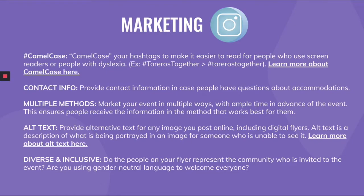Make sure to provide contact information in case people have questions about accommodations at the event. Market your event using multiple methods, with lots of time in advance, so people can receive the information in the method that works best for them. Providing alternative text for any images — especially digital flyers — is really important. Alternative text is a description you write on social media that describes what's being portrayed in an image for someone who is unable to see it. We have a quick 60-second video about alternative text linked.